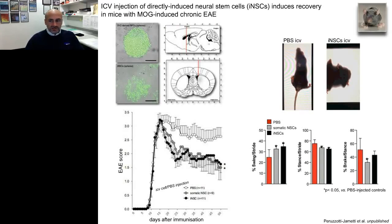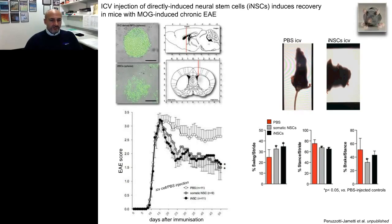In a very translational effort, we transplanted GFP-tagged neural stem cells or INSCs into the left lateral ventricle of mice with clinically evident MOG-induced experimental autoimmune encephalomyelitis as a model of multiple sclerosis. We collected both behavioral data by means of EAE score as well as unbiased gait analysis, showing significant reduction of accumulation of secondary damage in mice with EAE transplanted either with somatic NPCs or with directly induced mouse-specific INSCs.